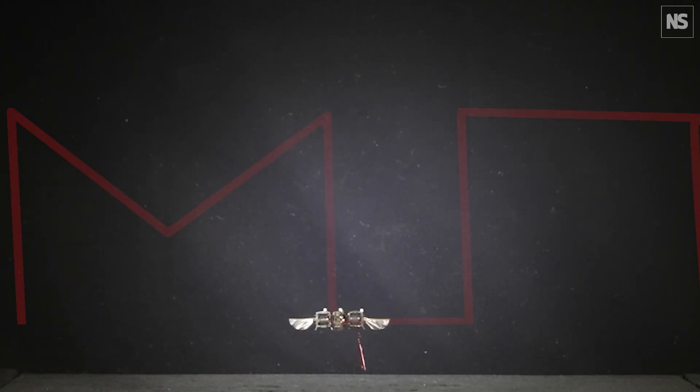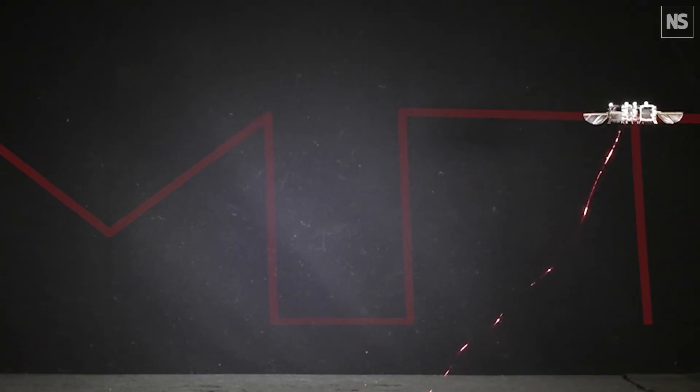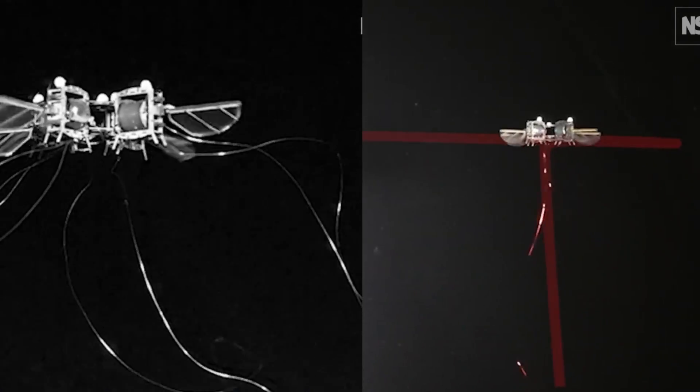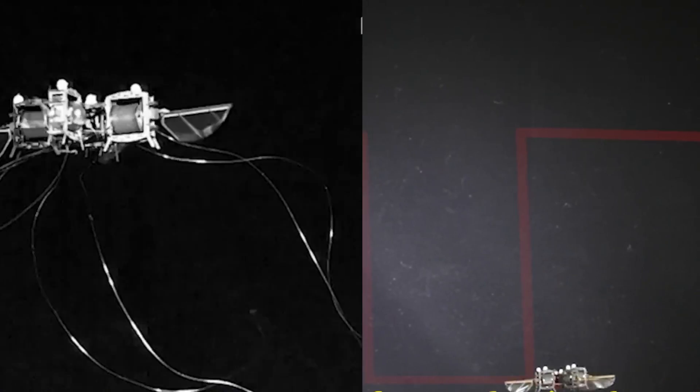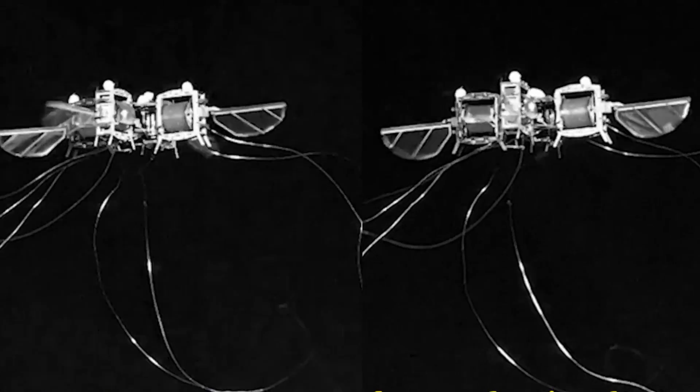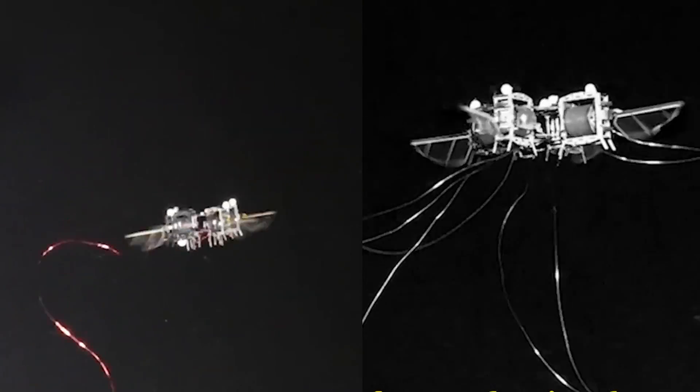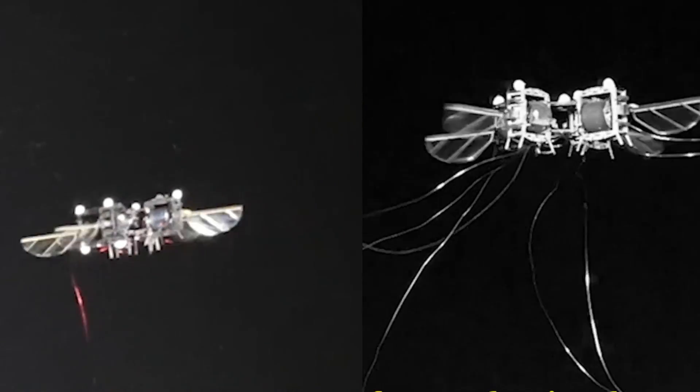The dream of humans creating a functional insect-like robot seems to be getting closer to reality. In the future, such tiny flying robots could perform tasks that range from secret missions for the intelligence services to environmentally beneficial activities like artificial pollination.